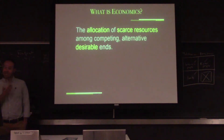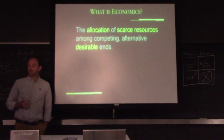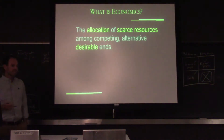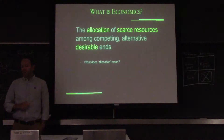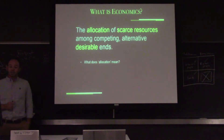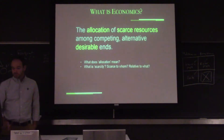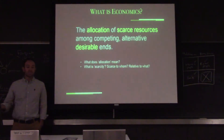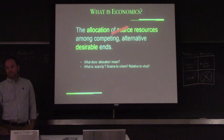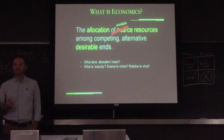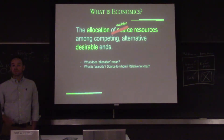Economics is classically defined as the allocation of scarce resources among competing alternative desirable ends. That's what you'll see in any Econ 101 textbook. The problem is, what does allocation mean? We say the allocation of scarce resources, but what do we mean by allocation? What does scarcity mean — scarce to whom, scarce relative to what? I actually like to think of, instead of scarce, available resources. If we change our thinking process from scarce resources to resources that are available to us, it changes this definition of economics.